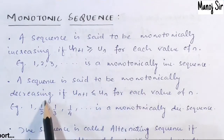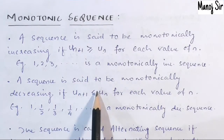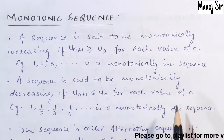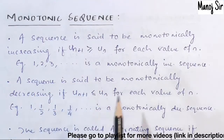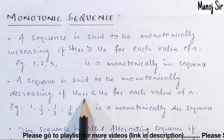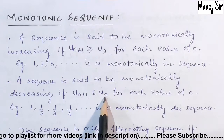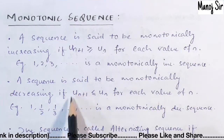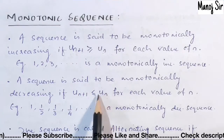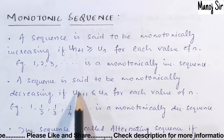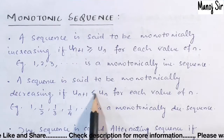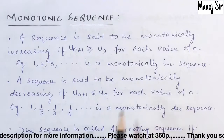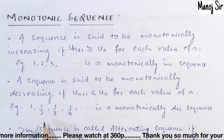A sequence is said to be monotonically decreasing if u(n+1) is less than or equal to u(n) for each value of n. Here, the next value u(n+1) has to be either less than or equal to u(n) for each value of n.